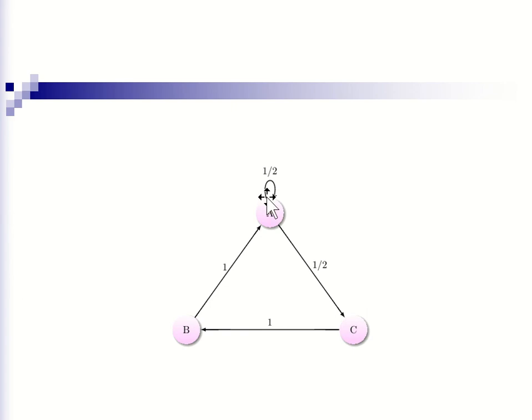However, what if we added a loop from A going back to A? In this example, you could go from A to C to B to A, which takes 3 steps. But you could also go from A to A in one step every single time. So technically, this state is aperiodic because the greatest common divisor between 1 and 3 is 1.